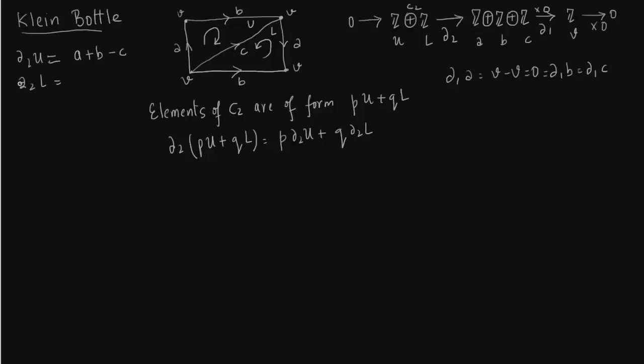Similarly for delta 2 L. So what do we have? We have A and C in opposite direction. So they get a minus sign. And yeah, that is it.